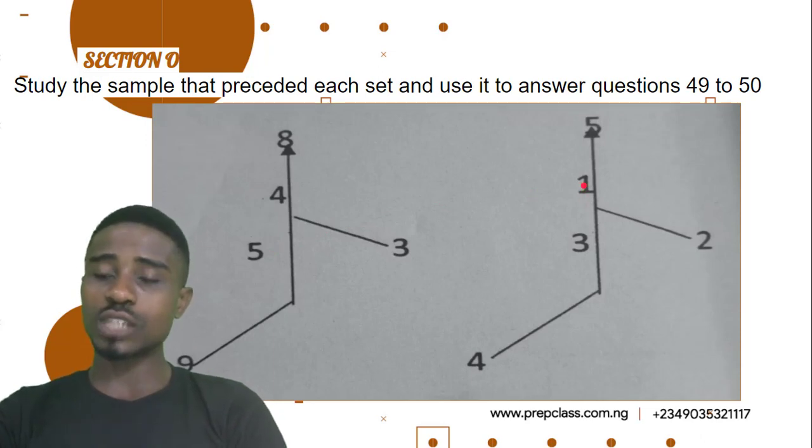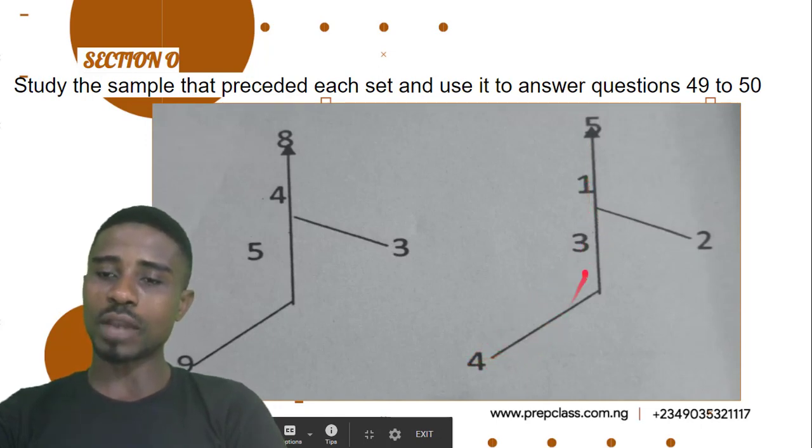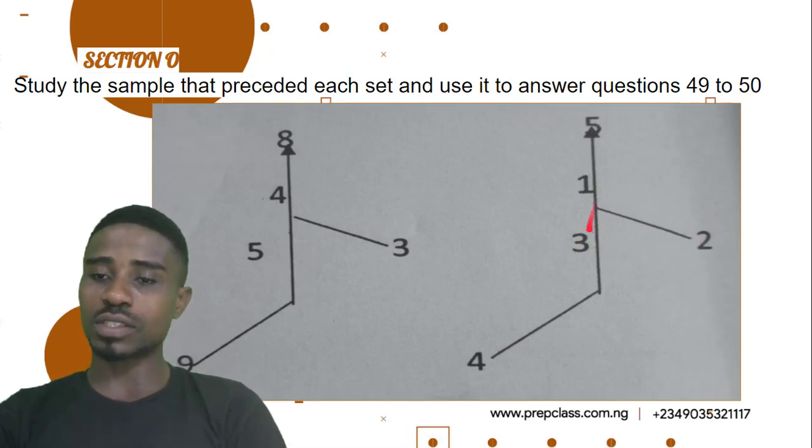Let's try out the next one. For the next one, I'll also use the same method I used here. 3 plus 2 is 5. 1 plus 3 is 4. So if 1 is missing, 4 minus 3 will get this 1. If 3 is missing, 4 minus 1 will get 3. If 2 is missing, 5 minus 3 will get 2. And if 3 is missing, 5 minus 2 will get 3. With this understanding, we'll be solving questions 49 to 50. Let's proceed.